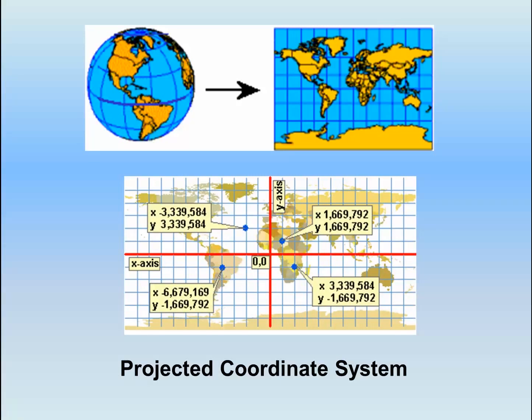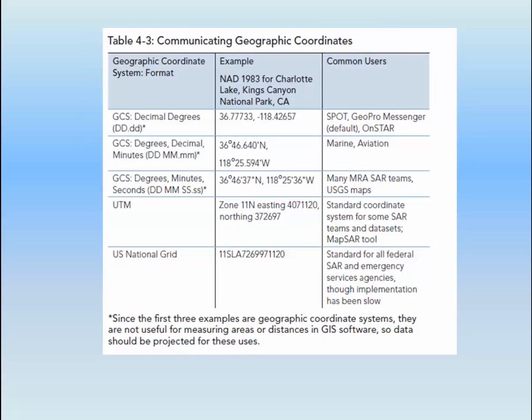Note that coordinates are represented as X and Y. This is almost always true when plotting Universal Transverse Mercator, or UTM, coordinates. Remember that Y is equivalent to latitude and X is longitude. The critical point, though, isn't so much whether you're dealing with a projected or geographic coordinate system, but that you become familiar with the main types of coordinate systems, recognize their formatting, and can clearly communicate coordinates in a variety of systems and know how to use them.